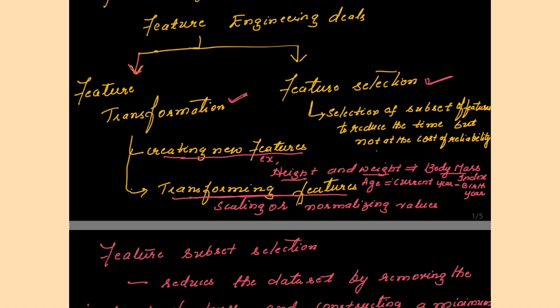Next is transforming features. You have already learned a few transformation techniques. When the values in the attributes are too large, you need to transform them so that values can lie between zero and one. There are several normalization techniques — the min-max technique and the z-score technique — using which you can transform the feature values in the data set.